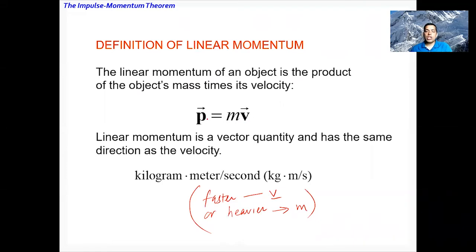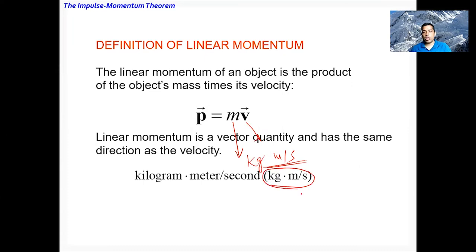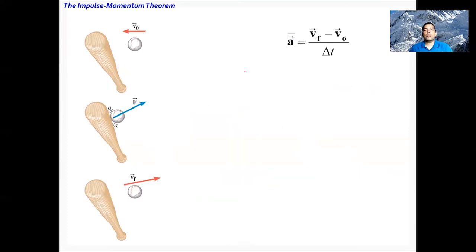Linear momentum is a vector quantity because it is the product of a scalar and a vector. The direction of linear momentum is the same as the direction of velocity. The unit of linear momentum is kilogram-meters per second.